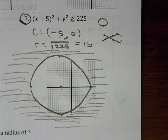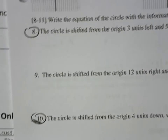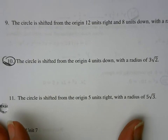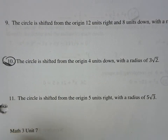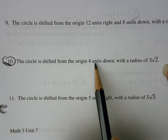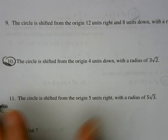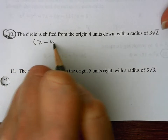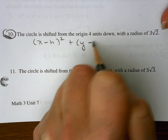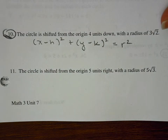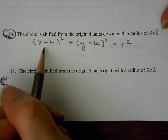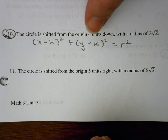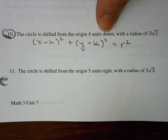Let's take a look at question number 10. We want to write an equation of a circle that is shifted from the origin four units down with a radius of 3 root 2. I'm going to write out the equation without numbers substituted in: x minus h squared plus y minus k squared equals my radius squared. My h is with the x — that's my left and right movement — and k is with the y, which is my up-down movement. I'm going four units down and not going left or right.